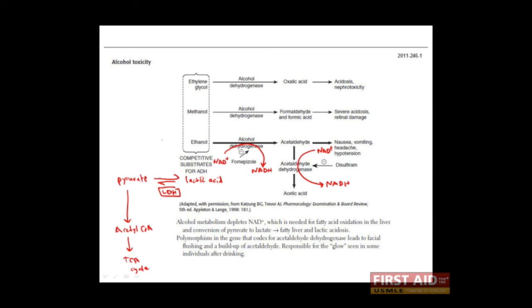The conversion of pyruvate to lactic acid is driven by the presence of NADH. This reaction consumes NADH and produces NAD+. Thus, when a person consumes large amounts of ethanol, that person is also making quite a bit of NADH. This NADH can then feed in at this step and drive the conversion of pyruvate into lactic acid, preventing it from entering the TCA cycle.